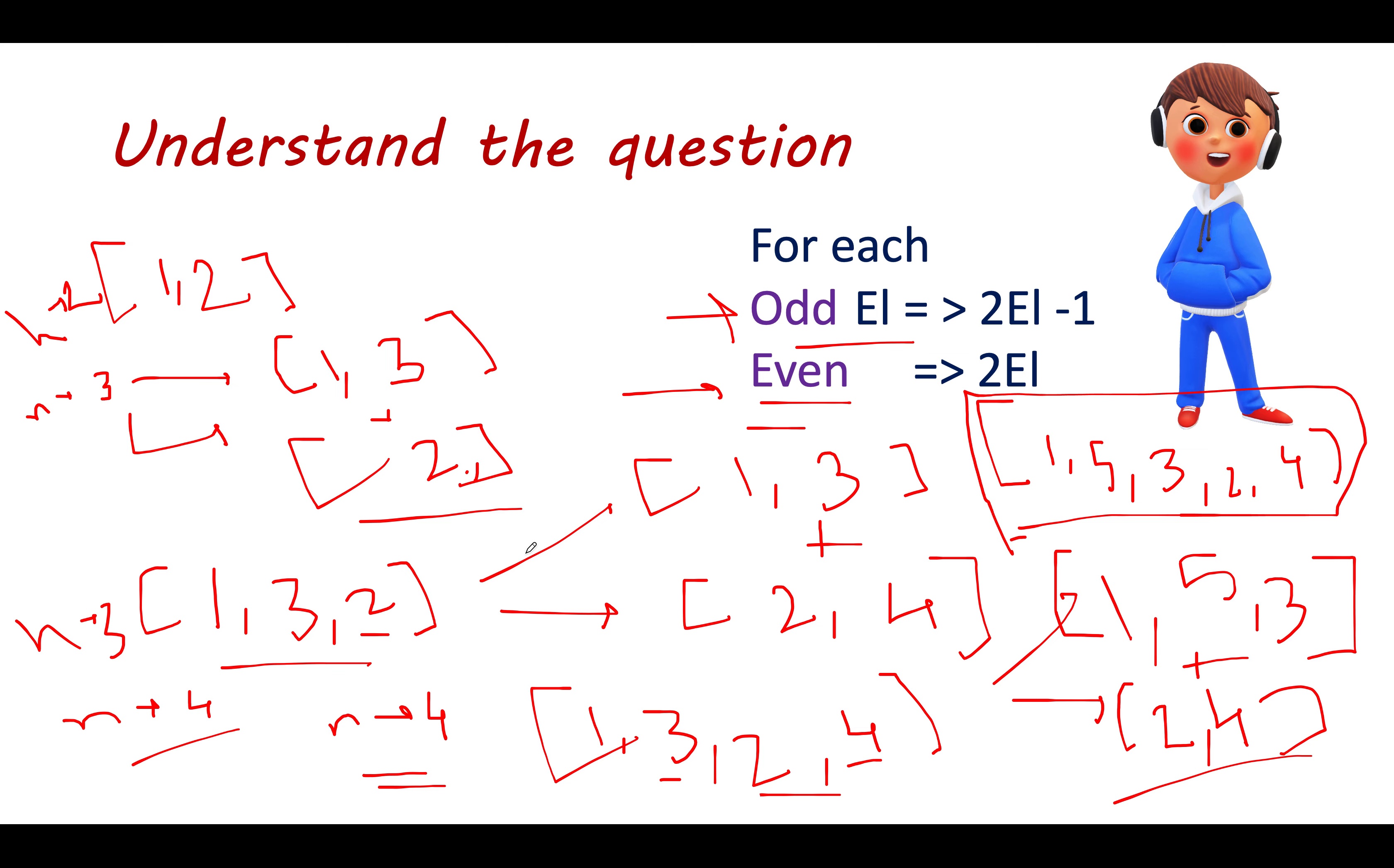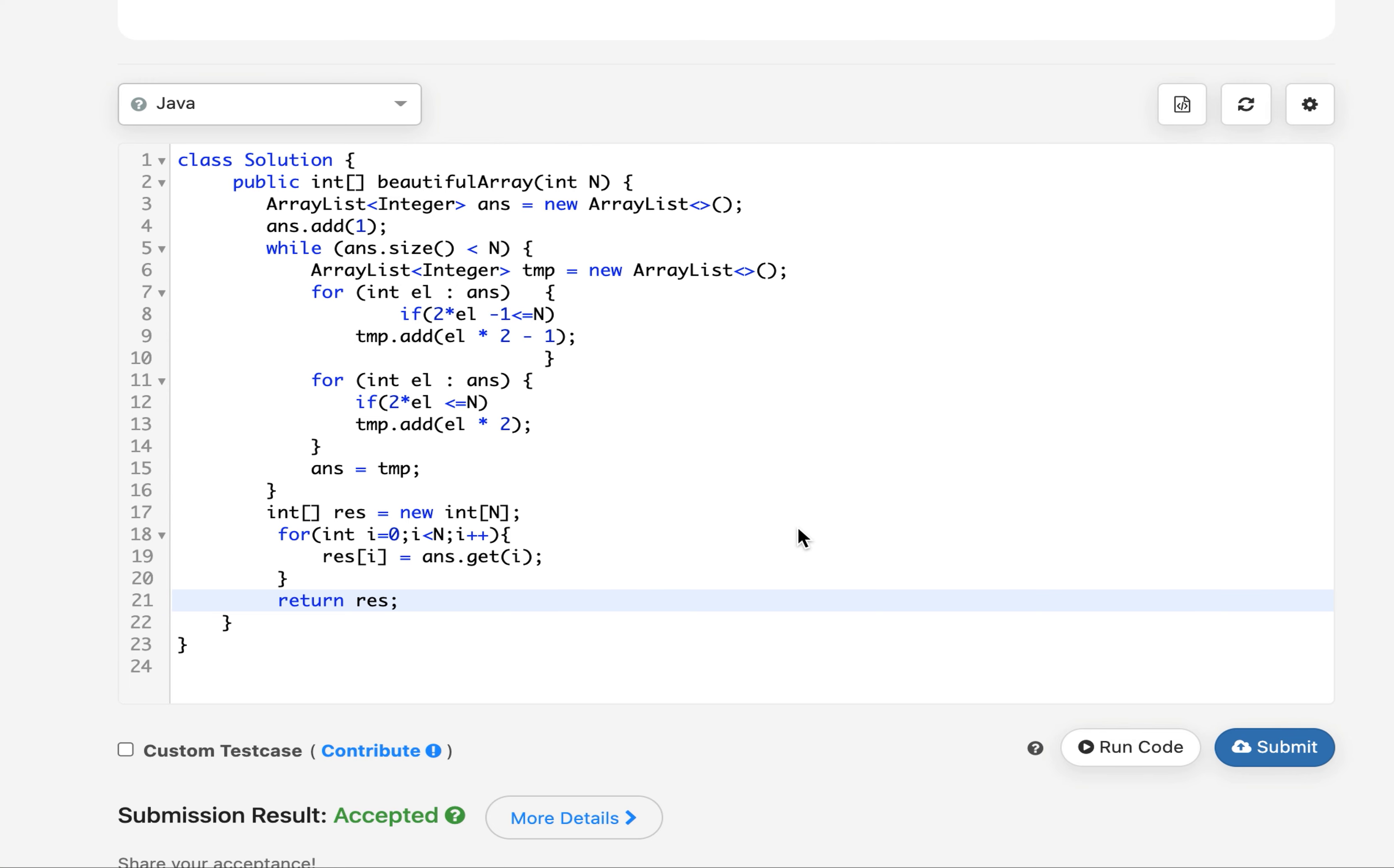The first thing that I have done here is to define my ArrayList. I have taken ArrayList instead of integer primitive array because this is dynamic in nature as we are growing the array list starting from one first index up till the end index. As a default case I add 1 to it. Till the time the size of my answer array is less than n, I create a temporary list. I start the iteration from the previously calculated ans array, and if my current element, the odd element 2 * el minus 1, is less than equal to n, I add it to my temporary list. Similarly I generate the even length array.